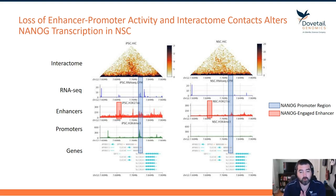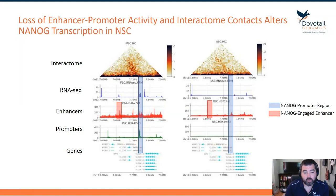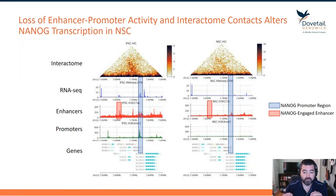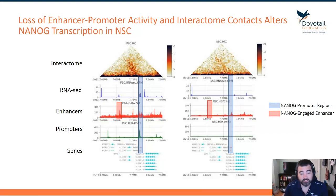So we've plotted out the Omni-C data for iPSC on the left and NSC on the right. Below that, we have RNA-seq coverage tracks in blue. And then in red, that's H3K27 acetylation ChIP-seq data for the enhancers.